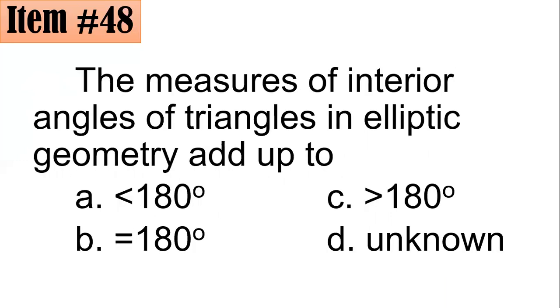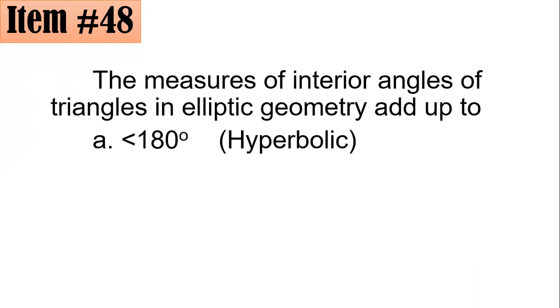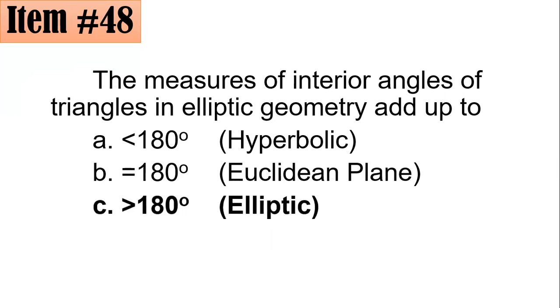Item 48. The measures of the interior angles of triangles in elliptic geometry add up to? Is it less than 180 degrees, equal to 180 degrees, greater than 180 degrees, or no? What do you think? And the correct answer here is, in letter A, it's less than 180 is true for hyperbolic, for triangles in hyperbolic geometry. For the Euclidean plane, meaning to say in the flat surface, the ones that we are usually studying in high school, it's exactly 180. However, in elliptic geometry, or let's say if you place triangles like in surfaces of globes or of spheres, you could actually see that it's more than 180. That's why it's greater than 180 in elliptic geometry, letter C.